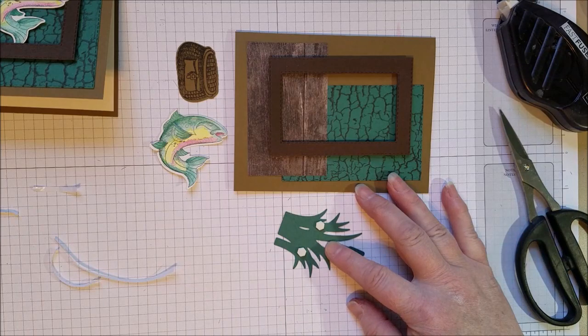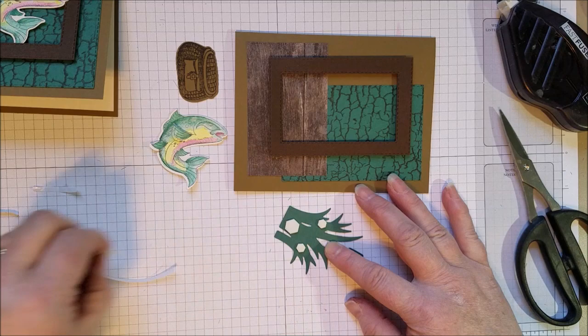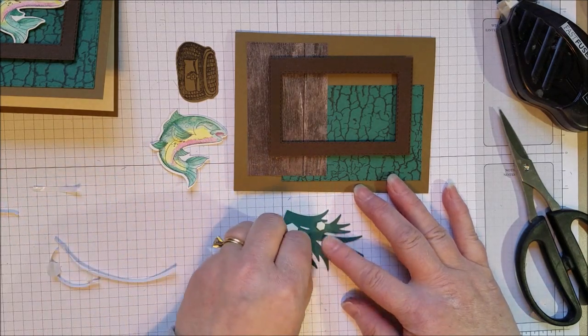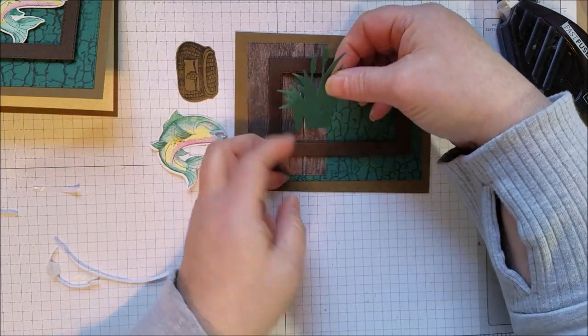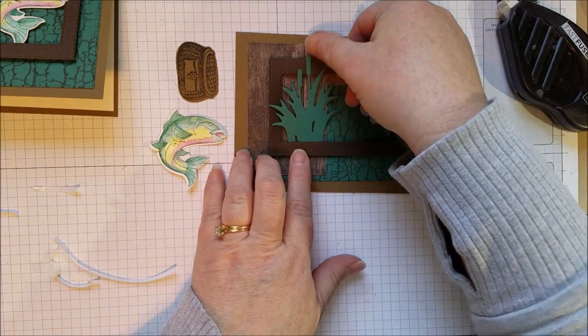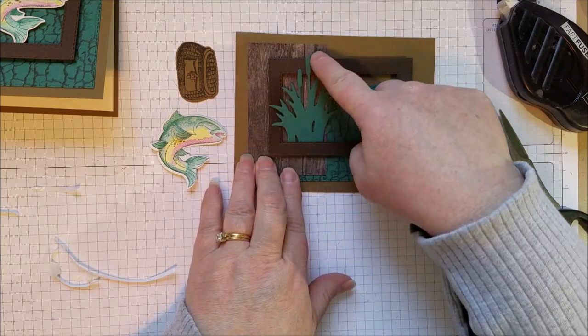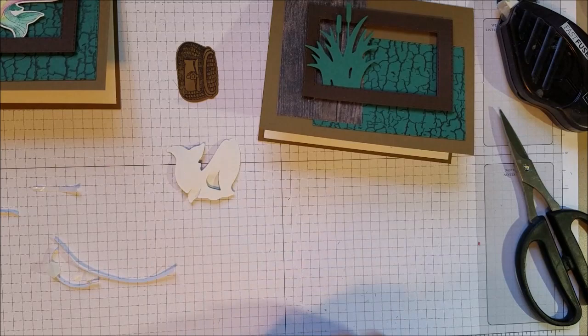I'm going to take this little grouping of weeds, cattails, and put those down. I used some of the mini dimensionals behind the skinnier parts and then one large one down here. Adhesives are another great thing to stock up on during Sale-A-Bration. Sale-A-Bration ends March 31st, so we've only got a couple more days. So I'm going to tuck that down under there and have it go on top of the frame. Kind of fun that way.